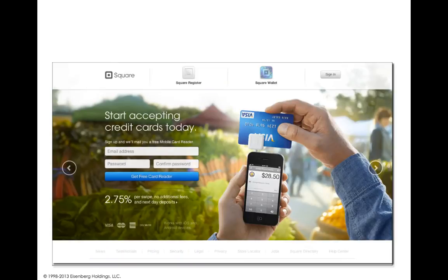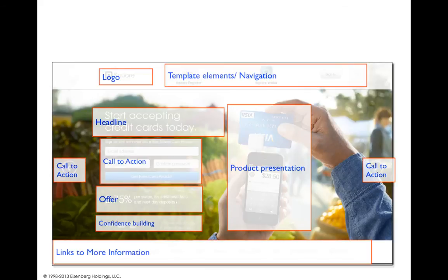Let's start with the Square page — a beautiful, very simple page. When we look at the anatomy, we've got the logo and template navigation elements, a simple headline, a main call to action, the offer below it which is an interesting aspect, some confidence-building material, a very big product presentation and a big hero lifestyle image. There are also some secondary calls to action in the sliders to look at their other products — Square Register and Square Wallet — and then links to more information on the bottom.